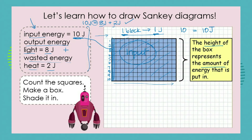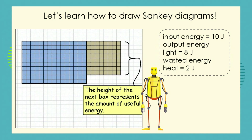The length of the box doesn't really matter — it's the height or width of the block that is important. Our next step is to start showing the output energy. We start with the useful output energy, counting one through eight blocks, which represents 8 joules, and extend it a little bit along. Now we've accounted for the useful energy.